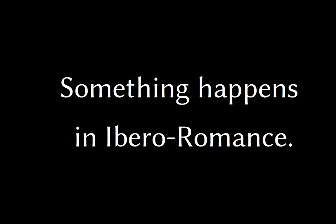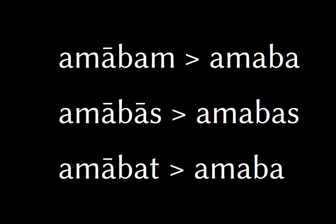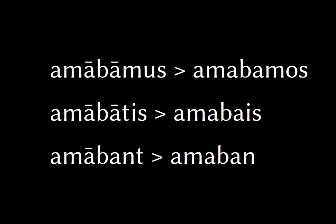Something weird happens specifically in Ibero-Romance — Spanish, Portuguese, Galician, Catalan, all the ones you typically think of. So amabam becomes amabam in a regular way, amabas, and all this is regular sound change: you lose the T in the third person, that's totally normal. The U in the first person plural turns to O, that's normal — this is all expected. But that's just AR stem verbs, the low vowel class.